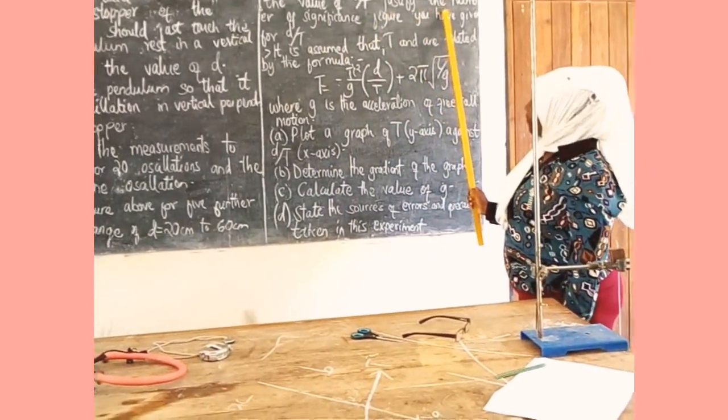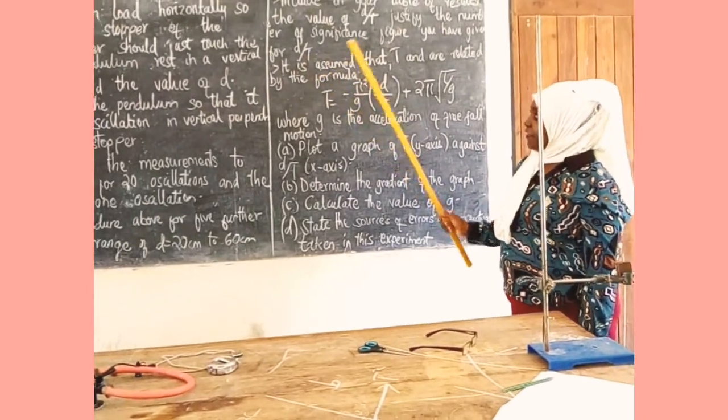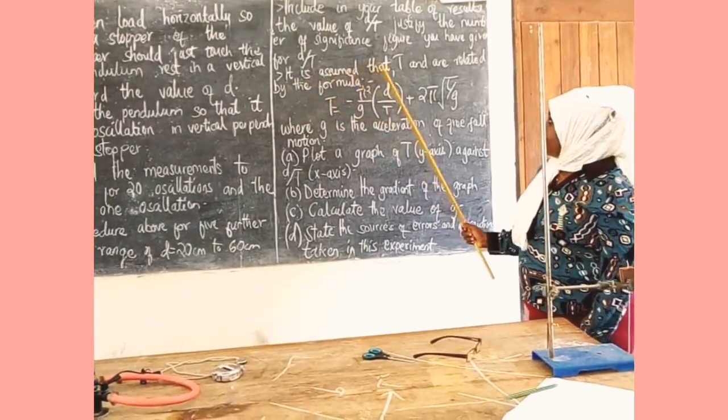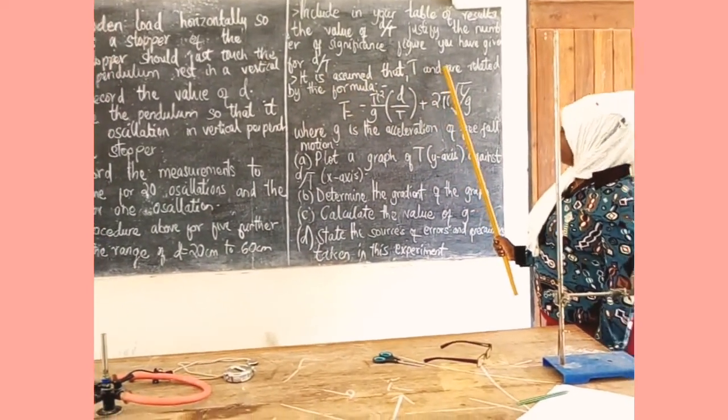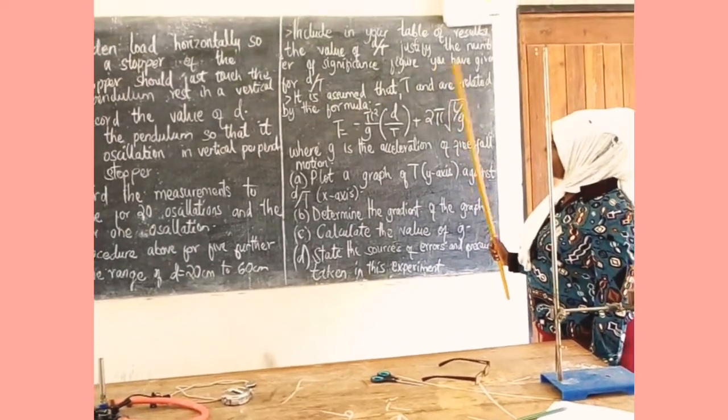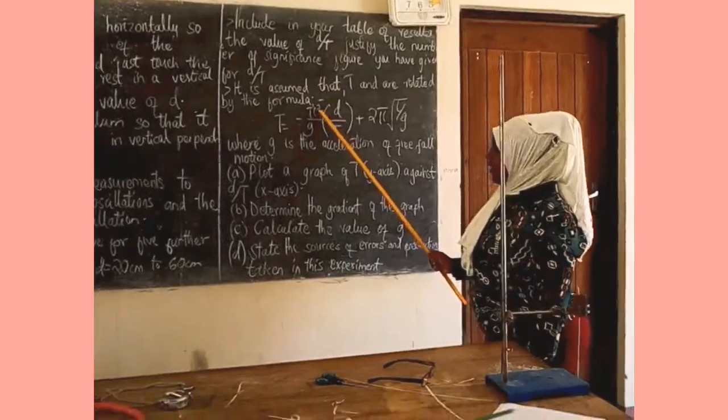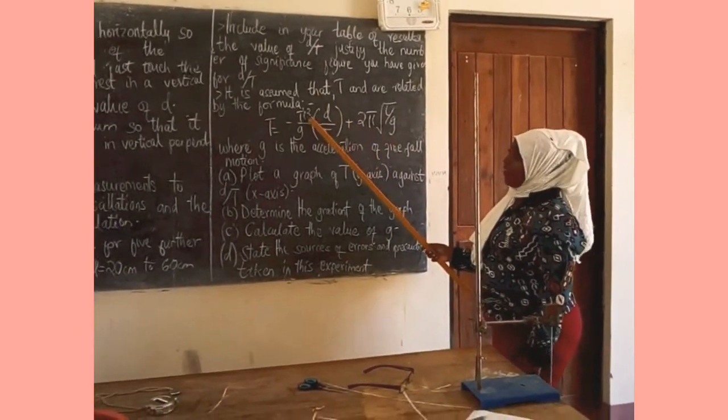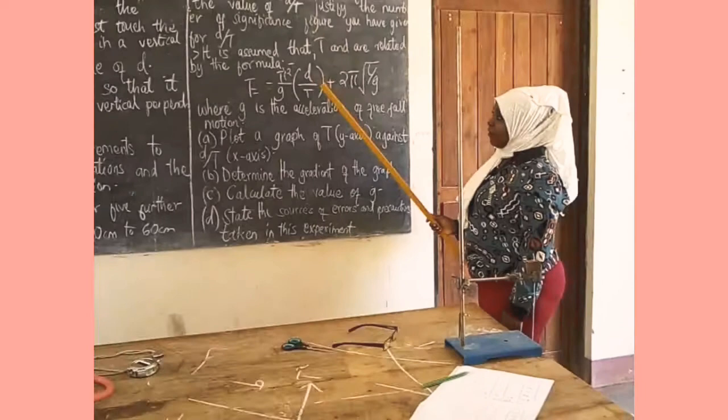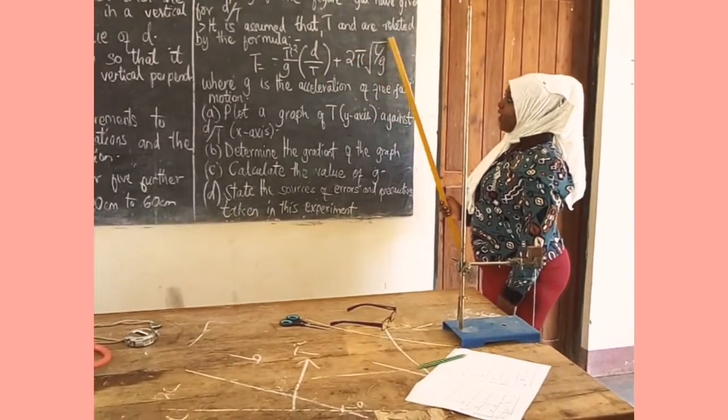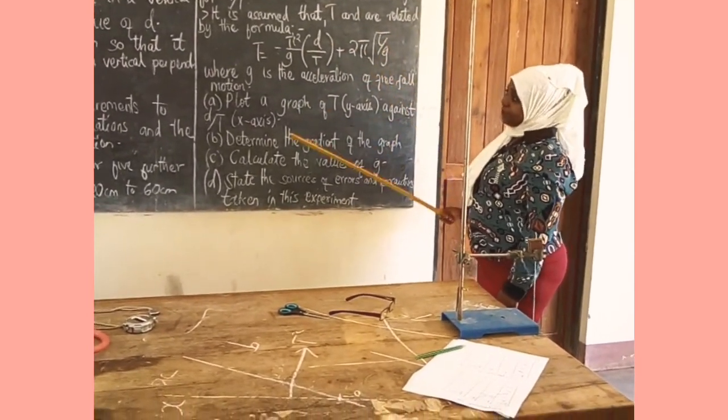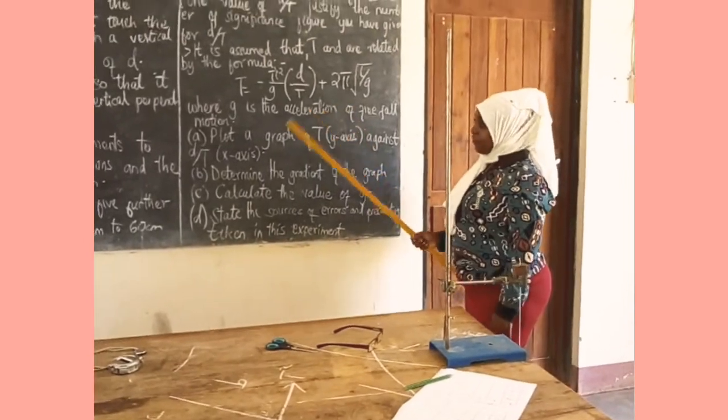It is assumed that D and T are related by the formula: T is equal to negative pi square over D into bracket pi square over G into bracket D over T plus 2 pi under root of L over G, where G is the acceleration of free-fall motion.